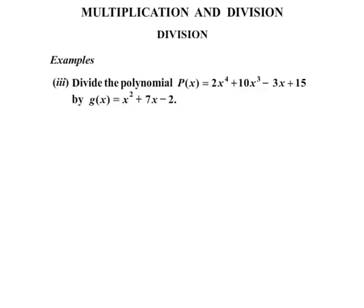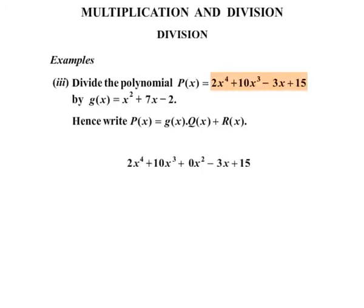We also need to divide P of x by g of x which equals x squared plus 7x minus 2, and hence write P of x equals g of x times q of x plus r of x. Looks pretty tricky, however one step at a time we'll find out that's not too bad at all. Let's start by writing down our original polynomial. Notice there was no x squared in the original, but we put plus 0x squared as a placeholder — that'll ensure that the division runs smoothly.